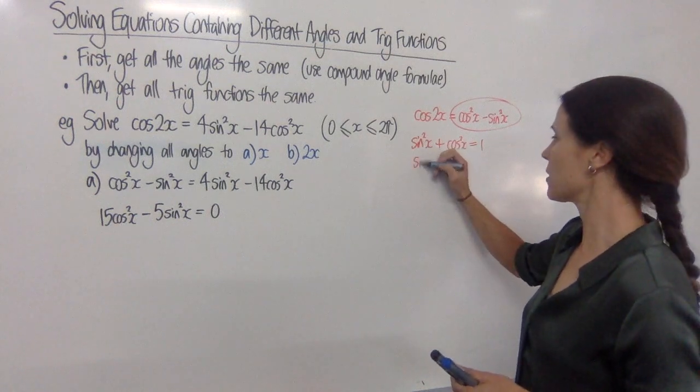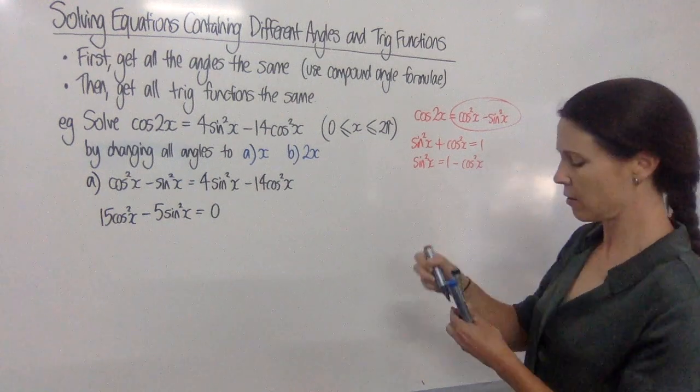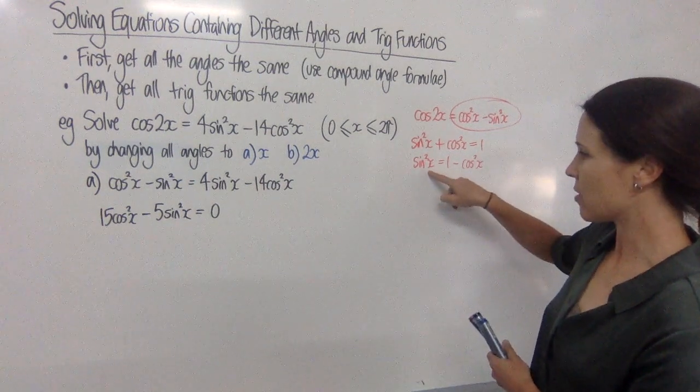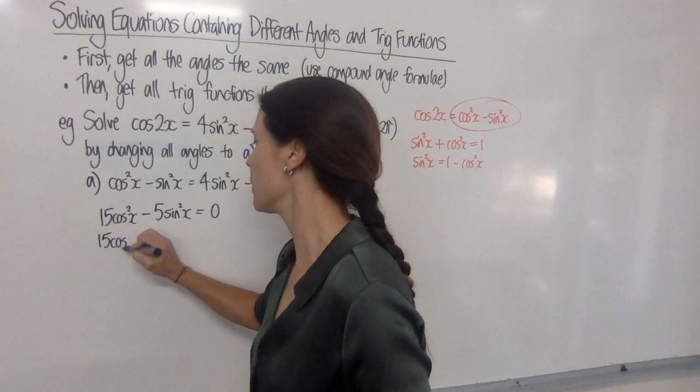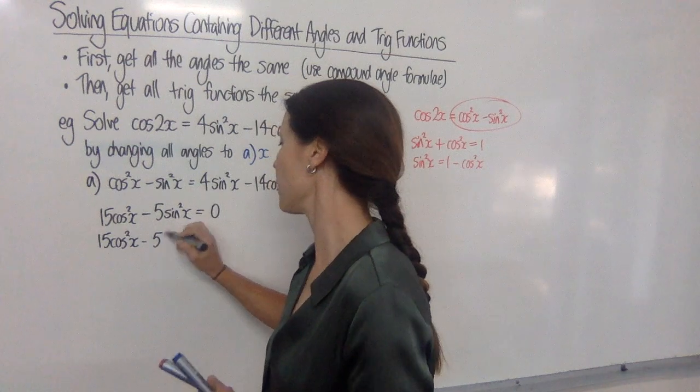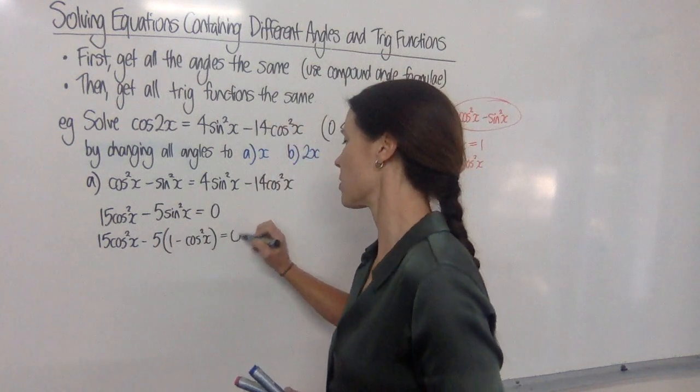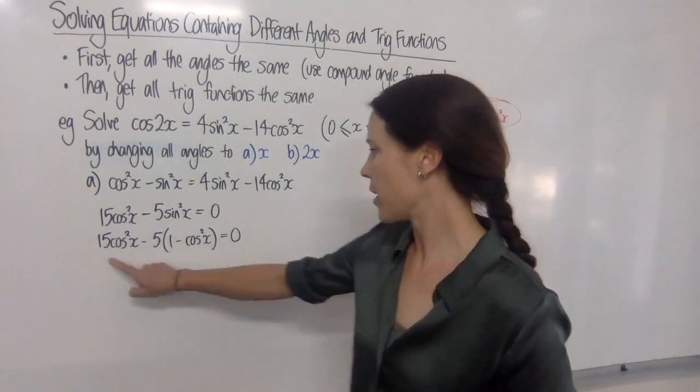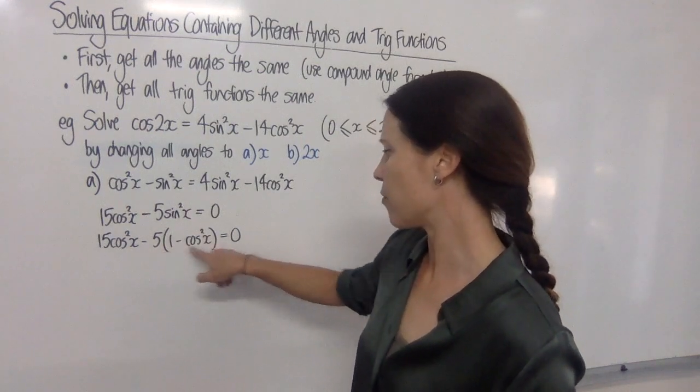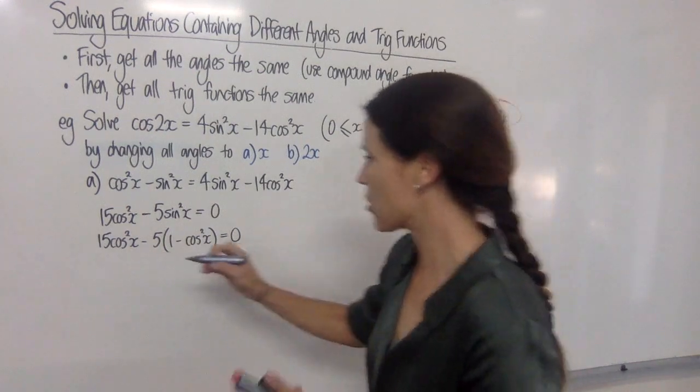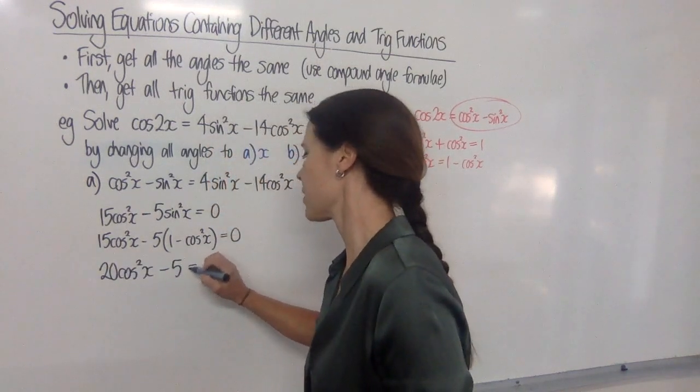Do some thinking and say, well, all right, that means that sin squared x must be 1 minus cos squared x. Or I could have done it the other way around. It doesn't matter too much. So let's swap out the sin squared x for this. So that's going to give me 15 cos squared x minus 5 lots of 1 minus cos squared x equals 0. So then expanding this out, I'm going to have 15 cos squared x's minus 5 plus another 5 cos squared x's. So I'm going to have 20 cos squared x minus 5 is equal to 0.